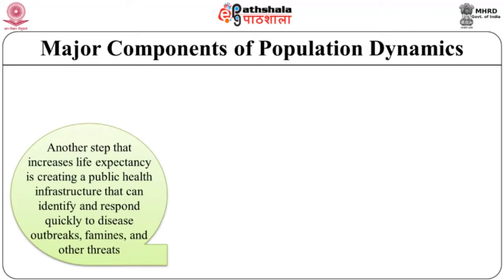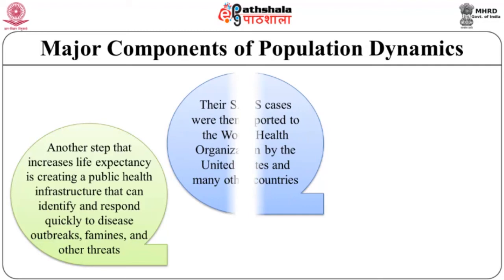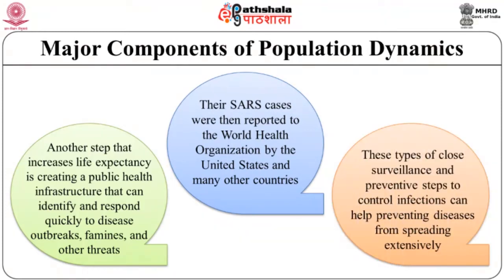For example, when severe acute respiratory syndrome (SARS) emerged as a disease, the US Centers for Disease Control and Prevention began an emergency response program requiring health departments to report suspected cases for assessment. They developed tests for identification of the SARS virus and kept healthcare providers and the public informed about the status of the epidemic. SARS cases were then reported to the World Health Organization by the United States and many other countries, demonstrating how close surveillance and preventive steps can help prevent disease from spreading extensively.